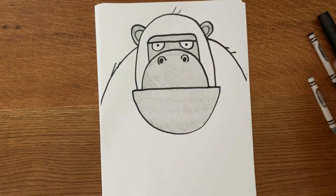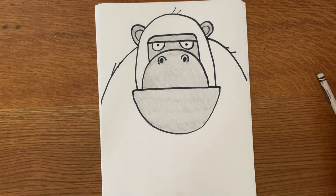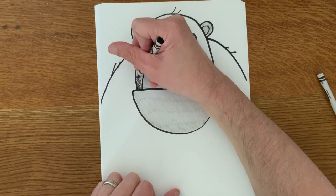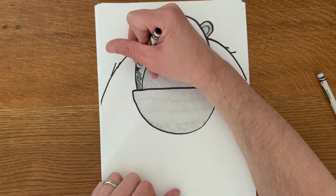All right, now you're ready to color the rest of the gorilla, which is going to be black. He's got black fur. And so I'm going to start here at the head because the body is going to be so much to color.